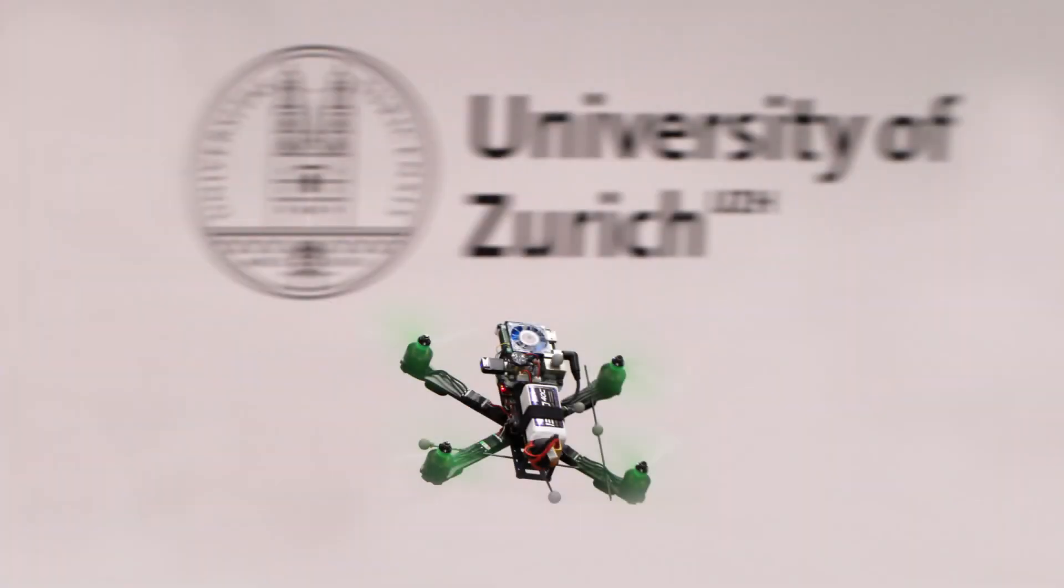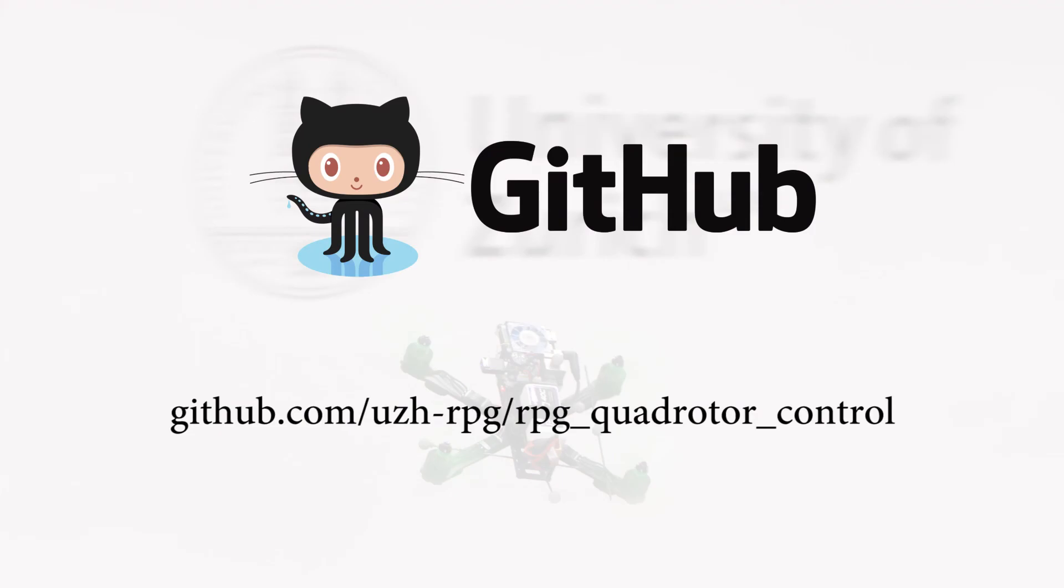Thanks to our method, by considering rotor drag in the controller we could reduce the trajectory tracking error of quadrotors by 50%. And the best thing is, it is all open source. So please check it out on github and try it out yourself. Thanks.